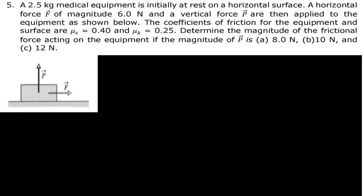A 2.5 kg medical equipment is initially at rest on a horizontal surface. A horizontal force F of magnitude 6 N and a vertical force P are then applied to the equipment as shown below. The coefficient of friction for the equipment and the surface are μs = 0.4 and μk = 0.25. Determine the magnitude of the friction force acting on the equipment if the magnitude of P is: A) 8 N, B) 10 N, and C) 12 N.